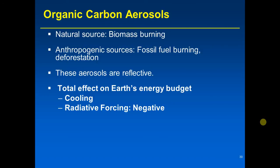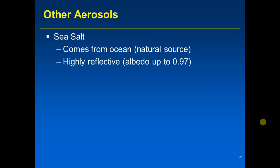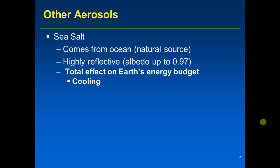We also have salt. Sea salt is one of the common forms, and as you might guess from the name, it comes from the ocean — it's a natural source. Sea salt particles are highly reflective. They have an albedo of up to 0.97, so up to 97% of the sunlight striking a sea salt particle is reflected back to space. So they have a cooling effect on Earth's energy budget, hence a negative radiative forcing.